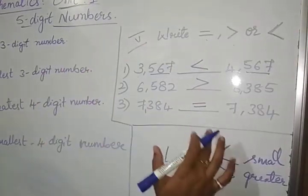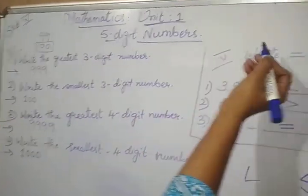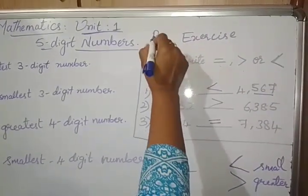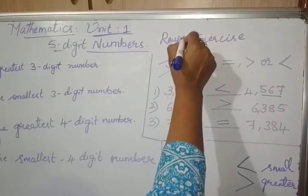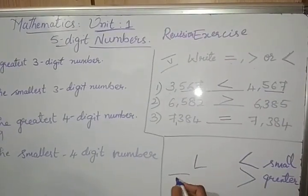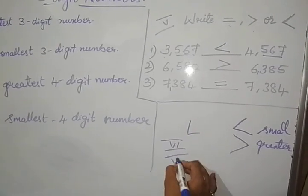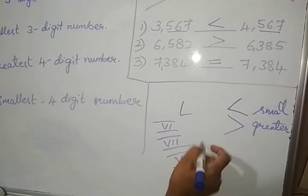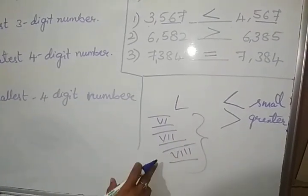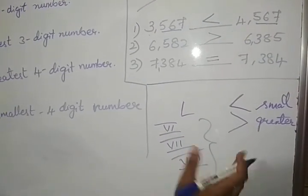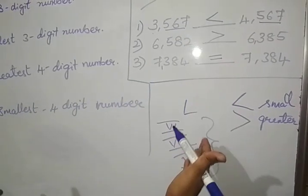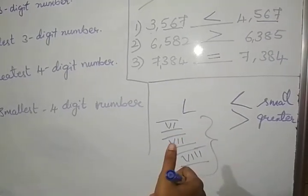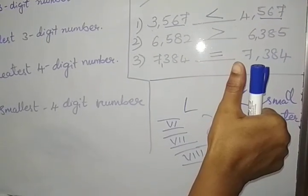5 Romans of 5-digit number, in that revision exercise. Remaining still, 6th Roman, 7th Roman, 8th Roman, these 3 Romans will continue in the next video. I hope you like this video, if you like it, please do share, like, and subscribe my channel.